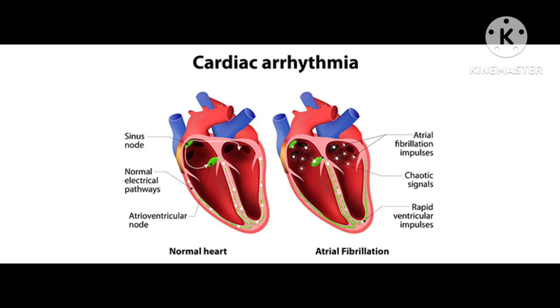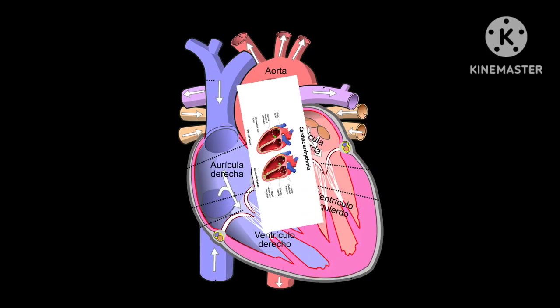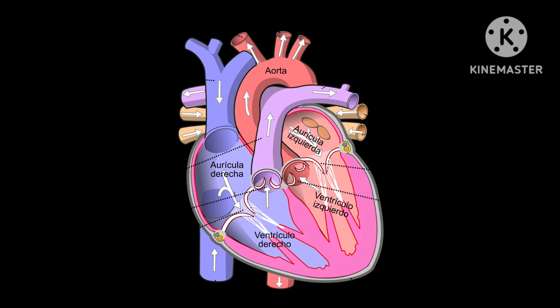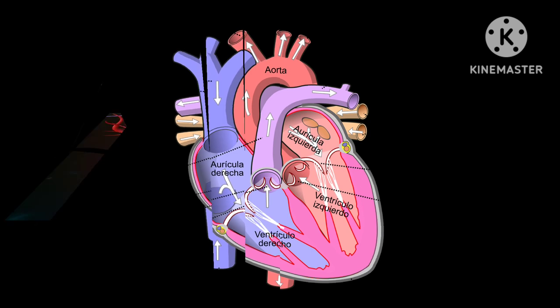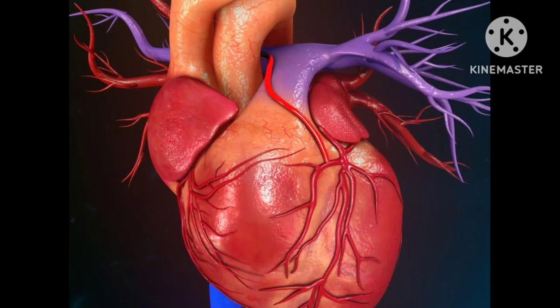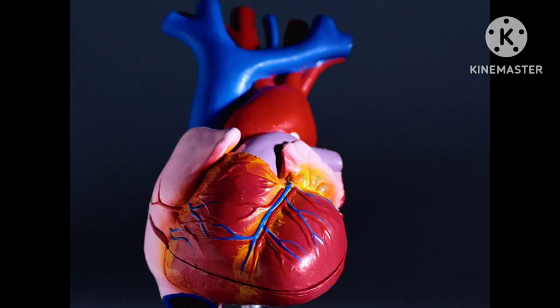Cardiac arrhythmia is a problem with the rate or rhythm of the heartbeat. During an arrhythmia, the heart can beat too fast, too slow, or with an irregular rhythm. A heart rate that is too fast is called tachycardia; a heartbeat that is too slow is called bradycardia.